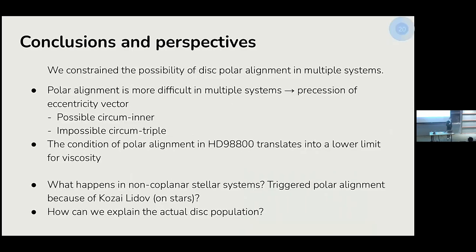In conclusion, we studied the possibility of polar alignment in multiple systems and found that polar alignment is more difficult in hierarchical systems with more than two stars, due to the secular evolution of the orbital parameters. In particular, polar alignment is nearly impossible in circumtriple disks, but is still possible in specific regions of parameter space around the inner binary. We are planning to expand this study to non-coplanar systems, where Kozai-Lidov oscillations of the stellar orbit can affect polar alignment and potentially trigger it by pushing the mutual inclination over the critical angle.